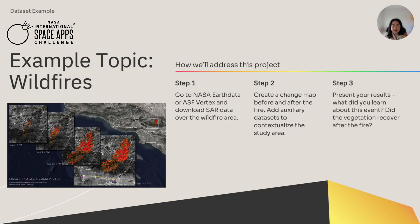And lastly, for step three, we want to present your findings. For this study, we can explore many questions, such as: What is the change in area between each data take of the burned area? Which vegetation types burned more than others? Did the terrain with high slopes burn more severely? Did the vegetation recover a year after the fire? The point of this project is for you to examine an area of interest and show how SAR can help detect change in that area — whether it's a fire, flood, changing crops, urban development, ice sheet movement, and more.